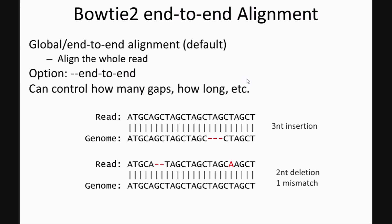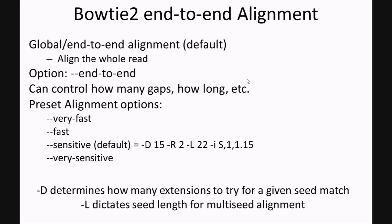Conveniently, Bowtie 2 provides you with a number of predetermined parameter settings that you can choose from. These are very fast, fast, sensitive, and very sensitive settings. The default for end-to-end is the sensitive setting, and the parameters are shown here, where capital D determines how many extensions to try for a given seed match, and capital L dictates the length of the seed for multi-seed alignment.